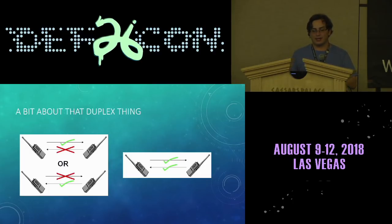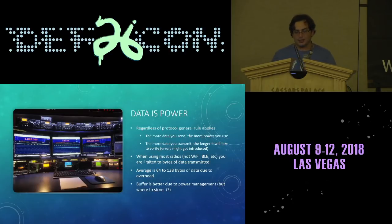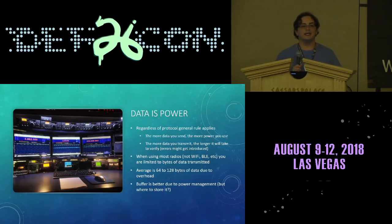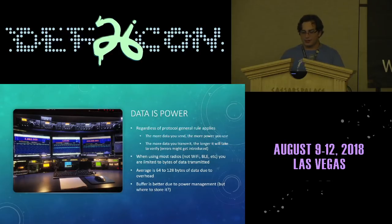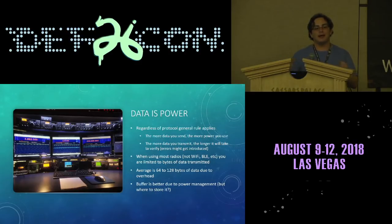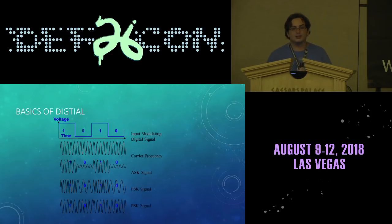Even Wi-Fi is half duplex. The general rule is: regardless of the protocol, the more power you use, the more data you can send. The more data you send, the more power you need. If you're running on a battery, you're going to run out of power a lot quicker sending a lot of data. When you're using Wi-Fi, it uses more power than something designed specifically for low power use, such as IoT protocols. And you have to think about compression — going from 128 bytes down to 64 bytes is a huge difference in how long these devices can operate.